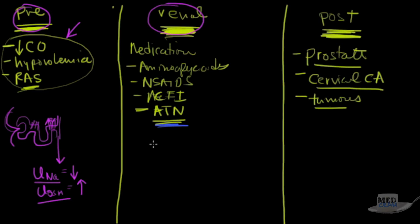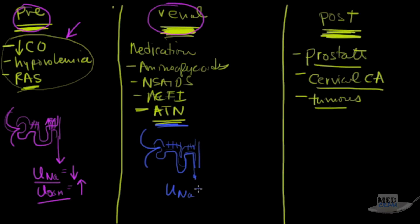On the renal failure side, blood flow to the kidney is fine, but the tubule cells are not working. Since they're not reabsorbing sodium and water, urine sodium concentration will be high. The urine osmolarity will be low — similar to serum osmolality — with a specific gravity around 1.010, sometimes written as '10-10.'